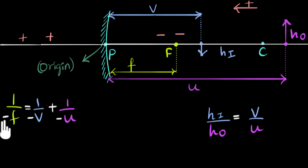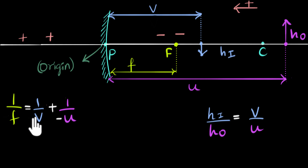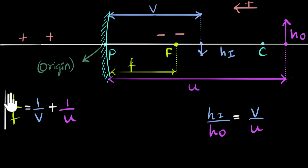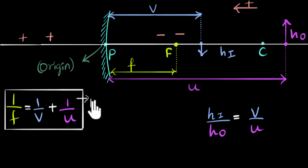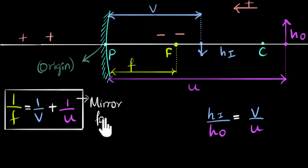Now that we have included the signs, this represents the most general formula. If there are negatives everywhere, you can multiply the whole thing by minus one to get rid of them. Either way, we have taken care of the signs, and this is now the general mirror formula. We can use this formula for any cases.